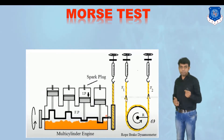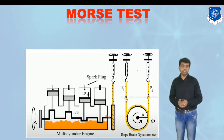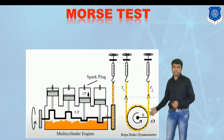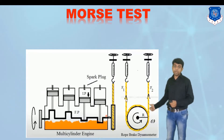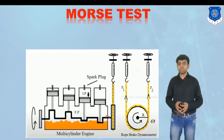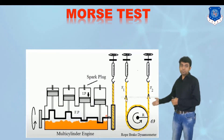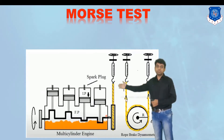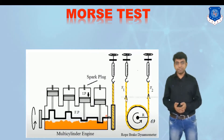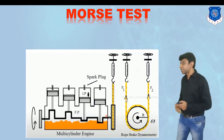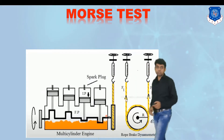We are going to conduct a multi-cylinder test in which we need to find out the indicated power of a single cylinder. To perform that, we recall the concept of the dynamometer. At the output engine shaft, we attach a rope brake dynamometer. This dynamometer gives the value of brake power available at the engine shaft when all four pistons are reciprocating, which indirectly helps find the indicated power of cylinders one, two, three, and four.